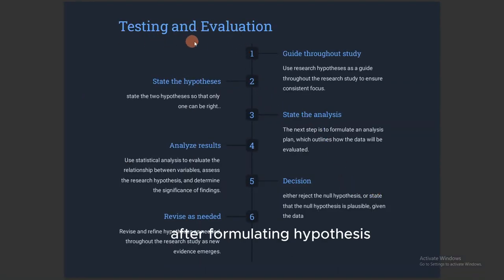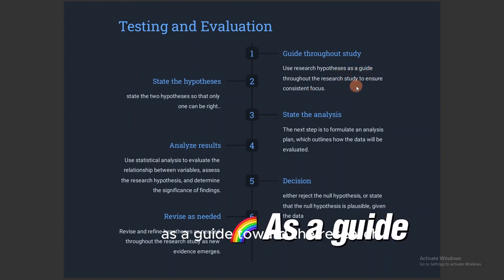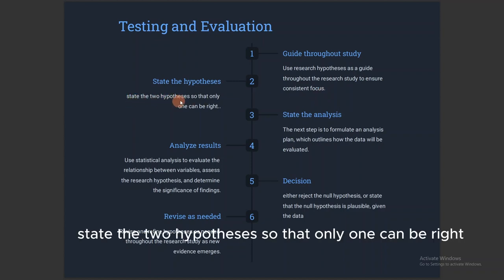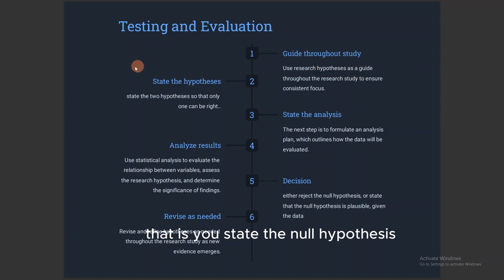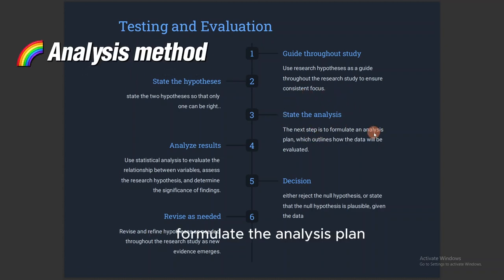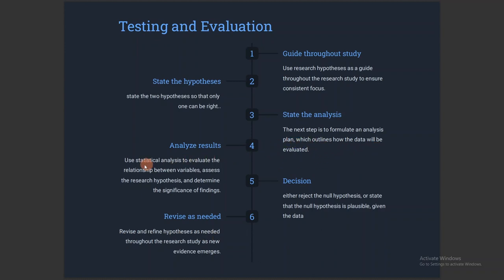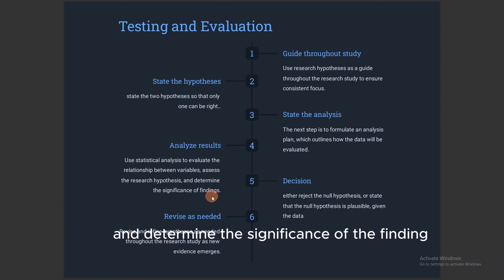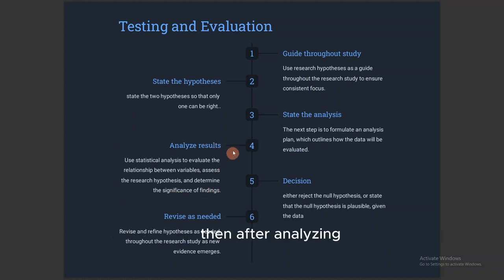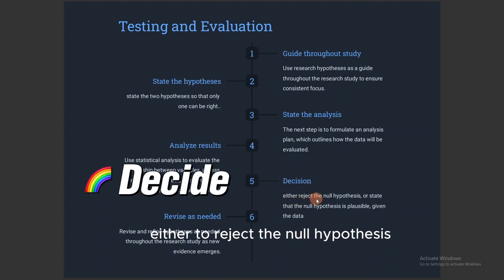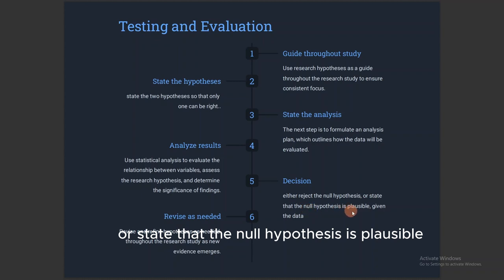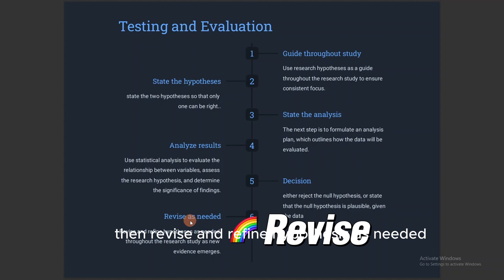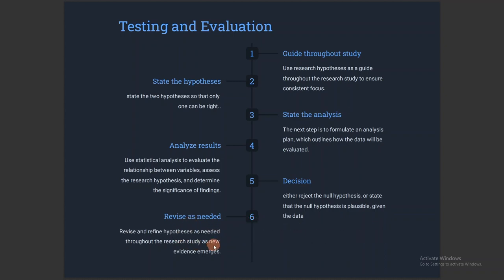After formulating hypotheses, you need to test and evaluate them. Use the research hypothesis as a guide throughout the research study to ensure consistent focus. State two hypotheses so that only one can be right — the null and the alternative hypothesis. Then state your method of analysis, formulate an analysis plan outlining how the data will be evaluated, and use statistical analysis to evaluate the relationship between variables. Assess the research hypothesis and determine the significance of the findings. Then make a decision to either reject the null hypothesis or state that it is plausible given the data. Revise and refine hypotheses as needed as new evidence emerges.